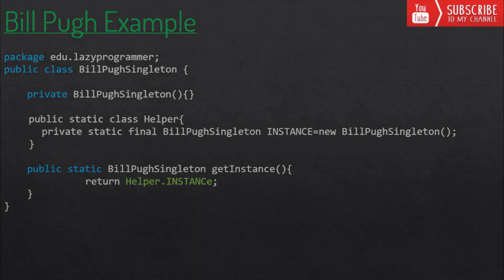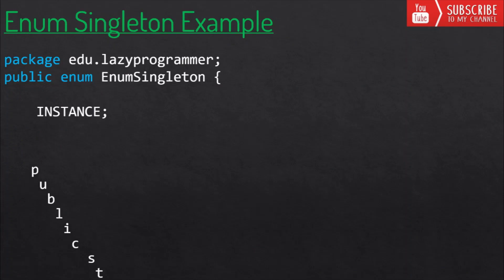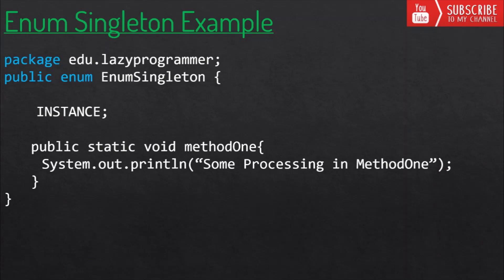Now let's move to the last approach: using enums. Enums are also used to implement the singleton design pattern. Java ensures that an enum value is instantiated only once in a JVM, and since Java enum values are globally accessible, so is the singleton. The drawback is that enum type is somewhat inflexible — for example, it does not allow lazy initialization, so it will always be eager initialization, meaning the object is created when the class or enum is loaded.